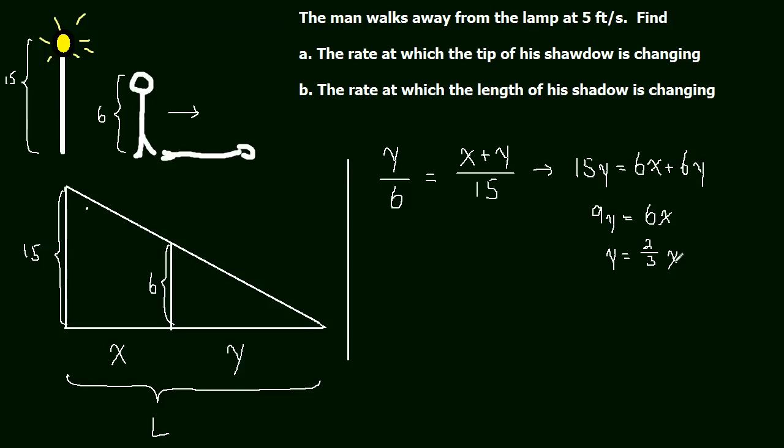So y equals two-thirds x. Perfect. So this was step one. Step one was figuring out this proportional triangle and solving for y in terms of x to eliminate a variable. Step two, how are we going to figure out what relationship will tell us how fast that point is moving? Well, we could figure it out because it's the rate at which L is changing, right?